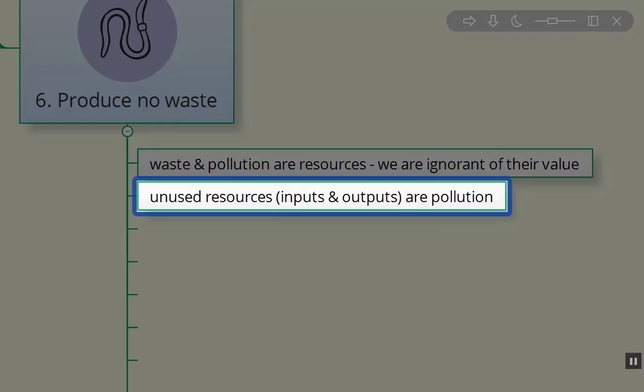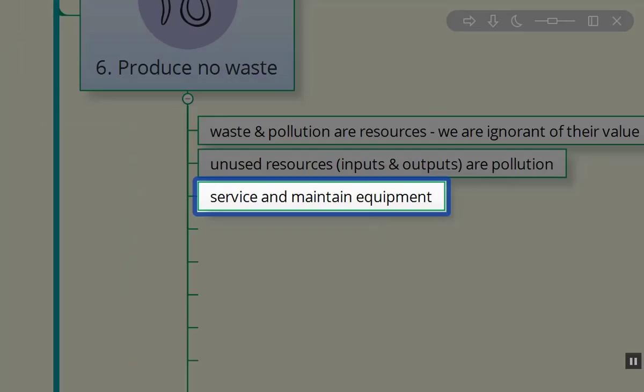Unused resources, the inputs and outputs are pollution, unless we think about what's coming out of the system, where can we direct that into? What comes next in our design system? Service and maintain equipment. So as I mentioned before, that degenerative investment, like the tractors that I have, my truck, my dump trailer, these are degenerative investments. However, with appropriate service and maintenance, I can keep them going as long as possible and reduce the chances and the amount of pollution they're putting into the environment.